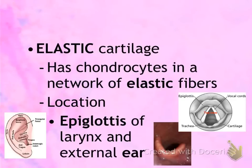The next type of cartilage is elastic cartilage. Just like hyaline cartilage, it has chondrocytes, which are your cartilage cells. Because it contains elastic fibers, elastic cartilage stretches very easily. Locations of elastic cartilage include the epiglottis — a flap that lies over the airway and covers it when you swallow food so food can't enter the airway. The cartilage that makes up your external ear is also elastic cartilage.